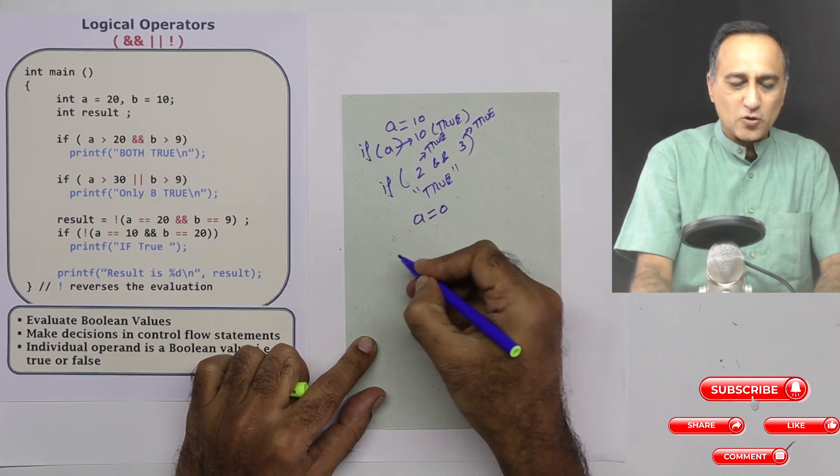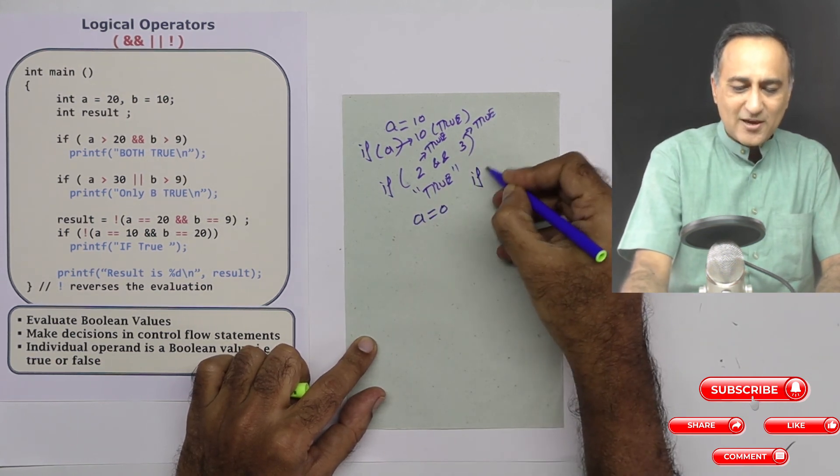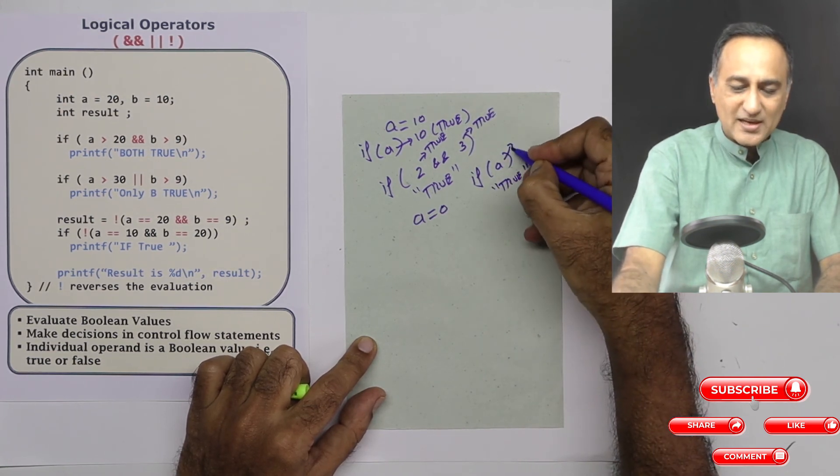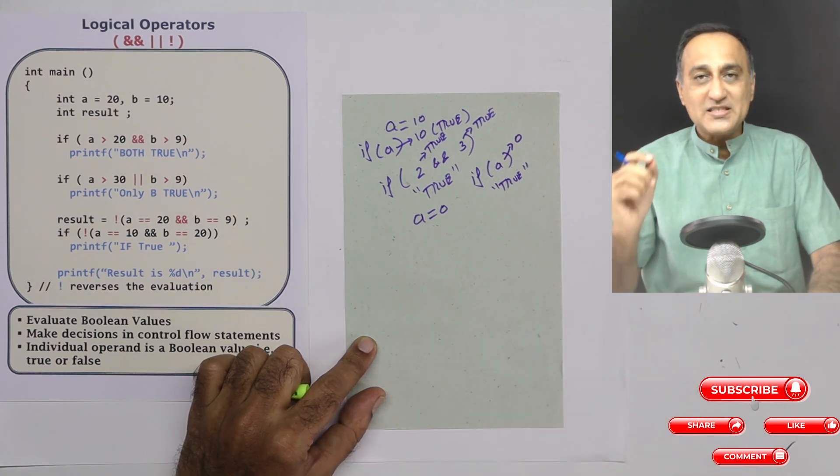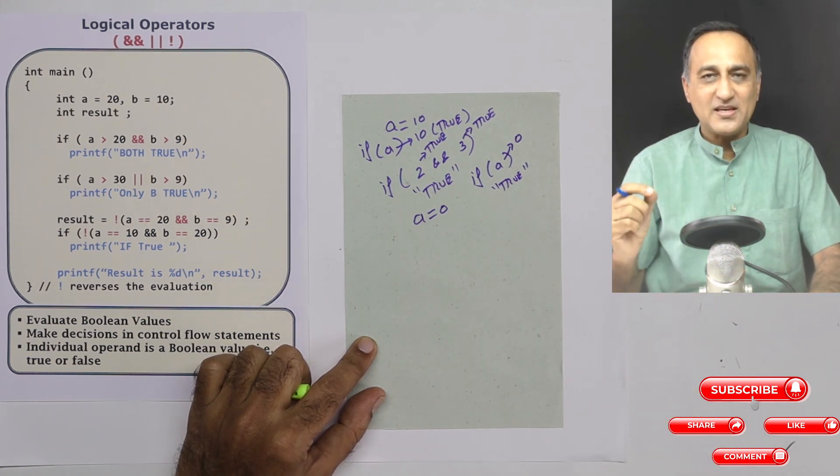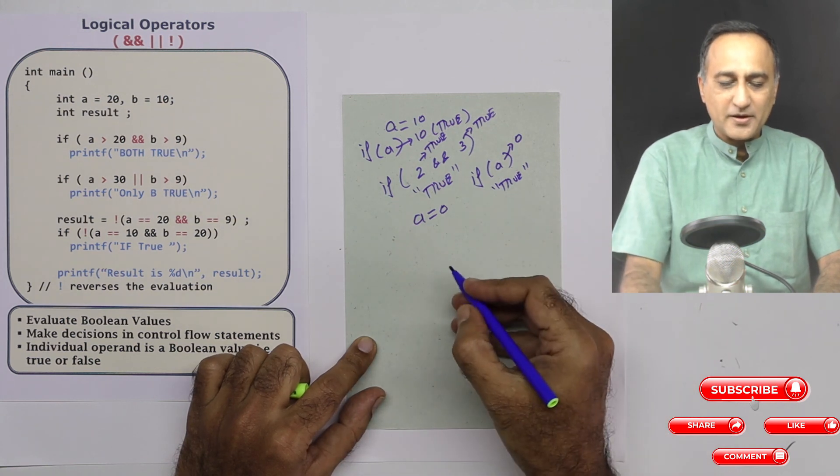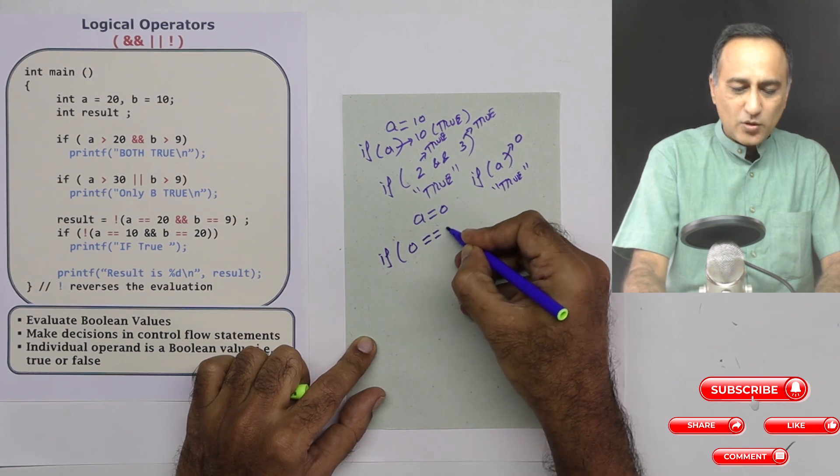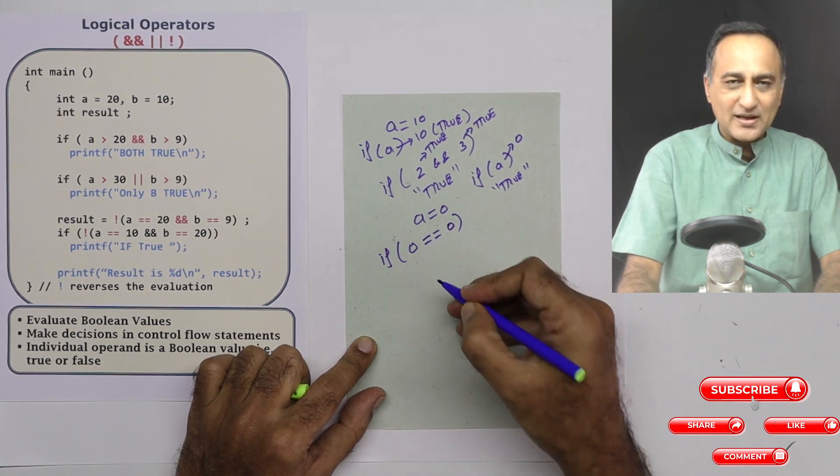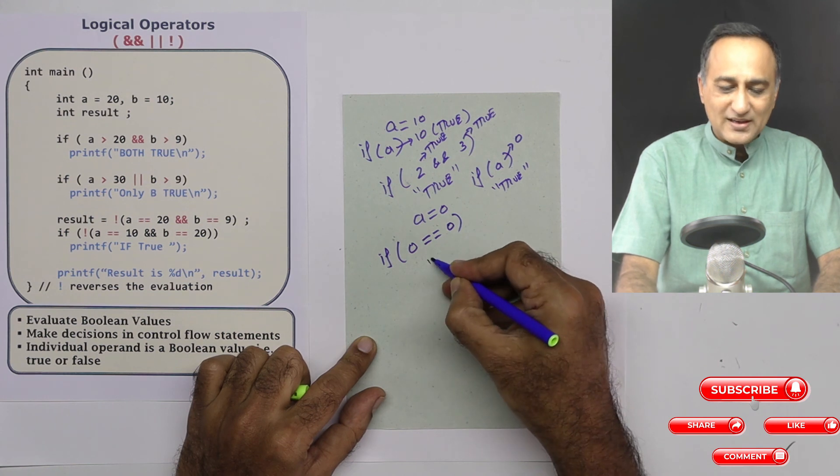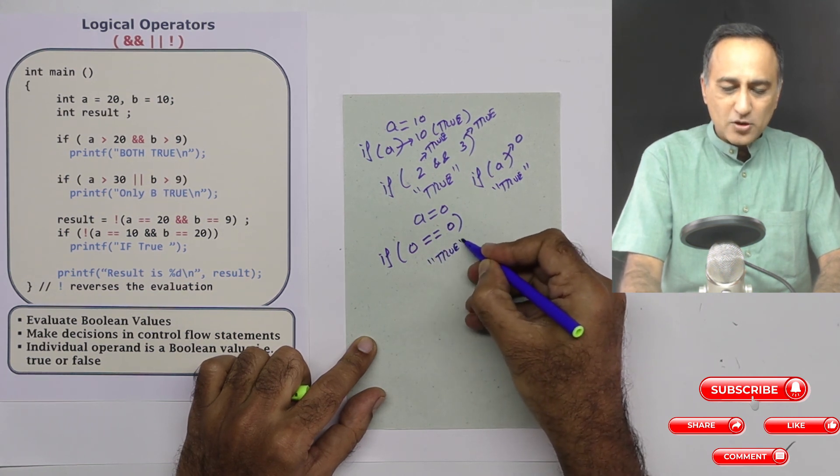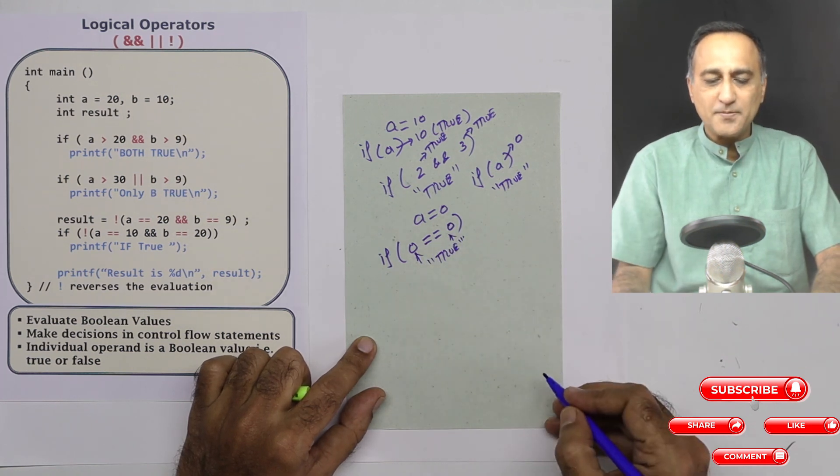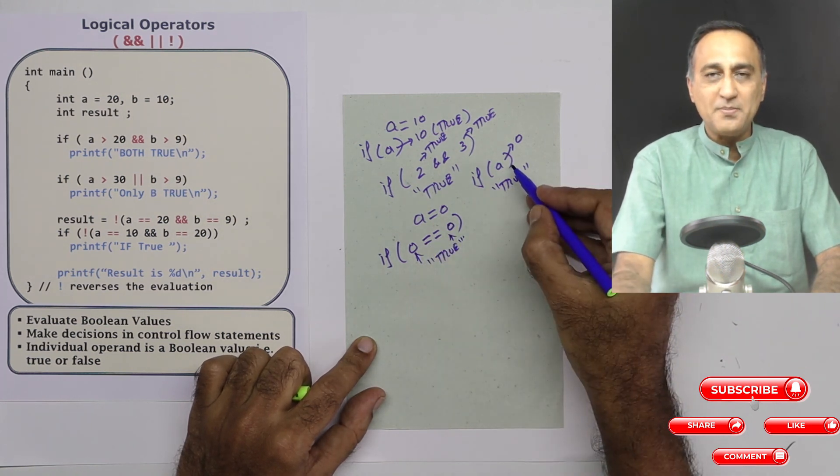Let's say now A is equal to zero. Now if I say if A and if I try to print true, it's not going to print because A has been replaced with zero. Zero is always false in C. So nothing will be printed. But if I do something like this, if zero equal to zero, I'm going a little ahead in the next step. We're going to do if zero equal to zero. Here it will print true because it is comparing this side with this side. Both are equal. Therefore, it's going to print the message. So this is very different from what I'm doing here.